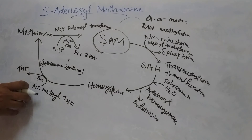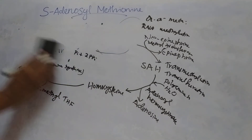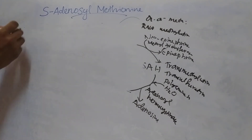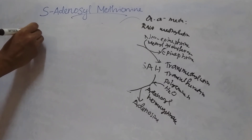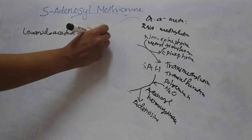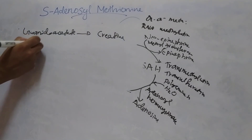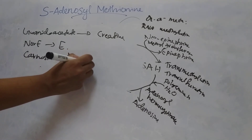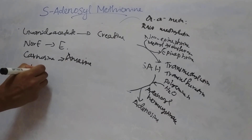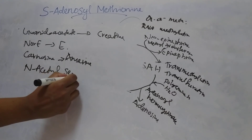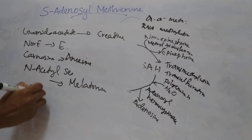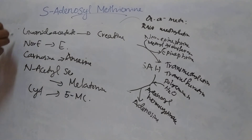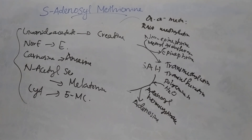S-adenosyl methionine is an important and universal methyl donor. It donates methyl to guanidoacetate to form creatine, norepinephrine to epinephrine, carnosine to anserine, N-acetyl serotonin to melatonin, and cytosine to 5-methyl cytosine. S-adenosyl methionine thus plays an important role in producing melatonin, serotonin, dopamine, and others.